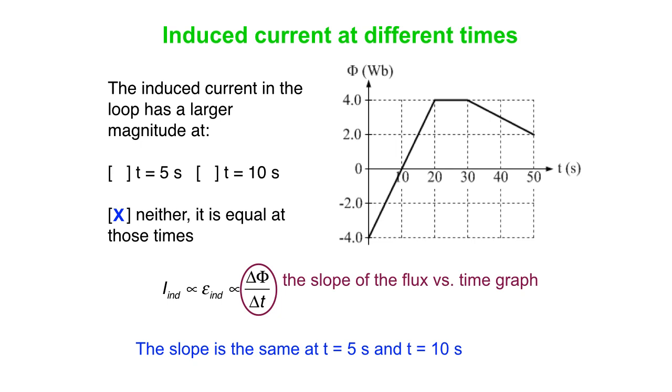So it doesn't matter that the value of the flux is completely different at these two different times. In fact, at t equals 10 seconds, the flux is zero. What really matters is what is the slope of the graph? How quickly is the flux changing? That's the same for both.